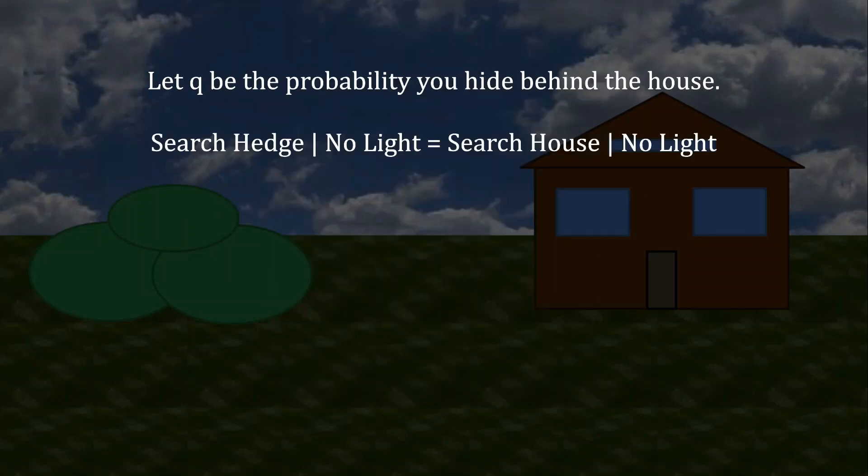Now we can figure out what you should be doing. Let Q be the probability that you hide behind the house. The goal for your strategy is to make me not care whether I search behind the hedge or search behind the house, given that I do not observe a light. So if we can write out the payoffs for both of those things, we can then set them equal to one another and solve for Q to figure out what you should be doing.